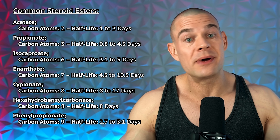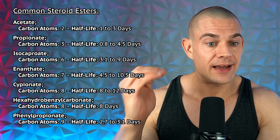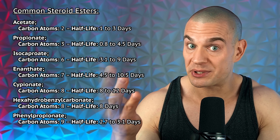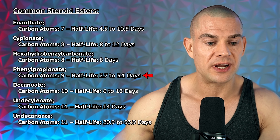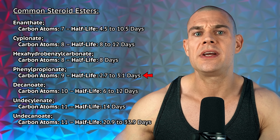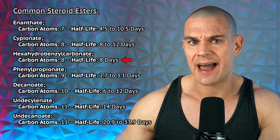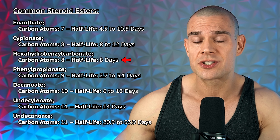Let's have a quick look at how many carbon atoms each steroid ester actually contains. As you go down the list, carbon atoms are somewhat correlated to half-life, but that isn't always the case. For example, phenylpropionate with nine carbon atoms has only a three-day half-life, while hexahydrobenzylcarbonate with eight carbon atoms has an eight-day half-life. Both have a cyclical benzyl structure. The difference comes down to the carrier oil — all of these half-lives have been determined in specific carrier oils at specific injection frequencies and depths, none of which has been standardized. So take the half-life with a grain of salt.